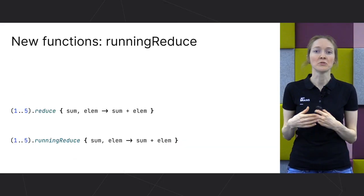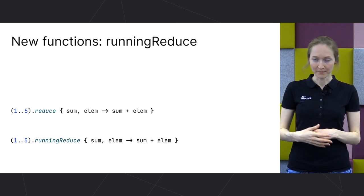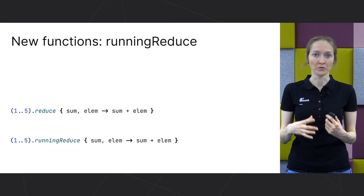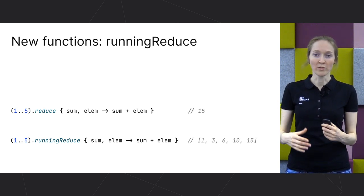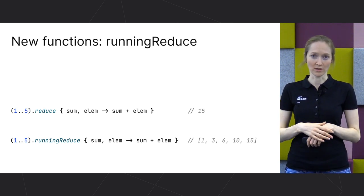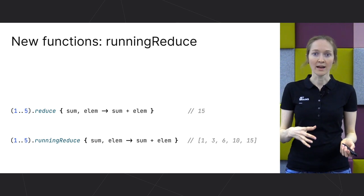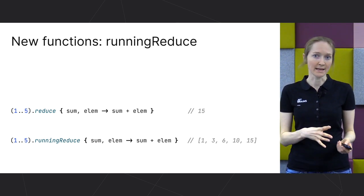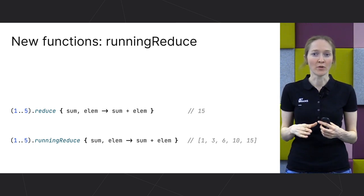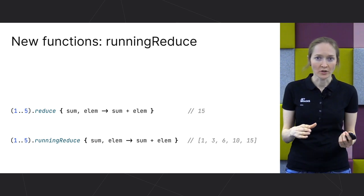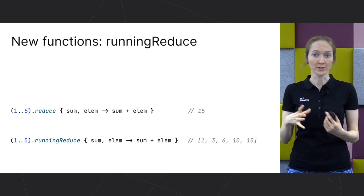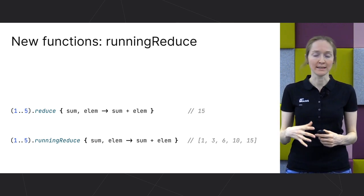Next, I want to highlight two new functions added to the standard library: runningReduce and runningFold. These functions are very similar to reduce and fold, which were already present, with the difference that runningReduce and runningFold return each step of the operation in a list or sequence. Let's look at the diagram and see how it works step by step. In this example, we call reduce and runningReduce on the range of numbers from 1 to 5. We are using a range to demonstrate, but this could also be a list or a sequence. For sequences, each intermediate step will be computed in a lazy manner.